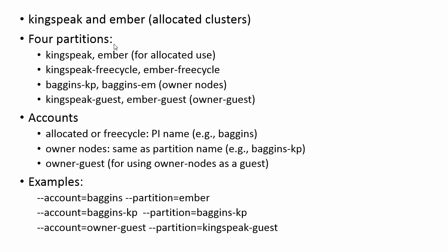The setup of partitions varies between different computing environments, but at CHPC we have basically four partitions that we use on our main allocated clusters, which are Kingspeak and Ember. For allocated use, the partitions are simply Kingspeak and Ember. If you are in a user group that has access to allocation, this is the partition that you will primarily use.